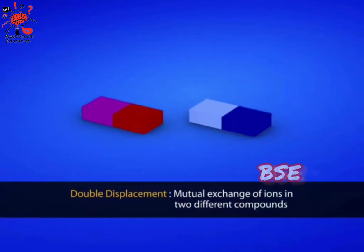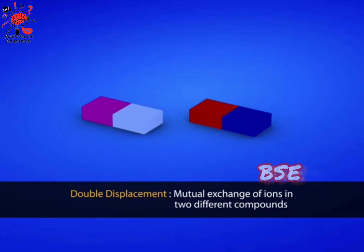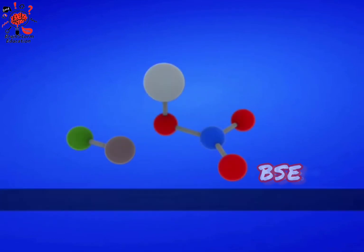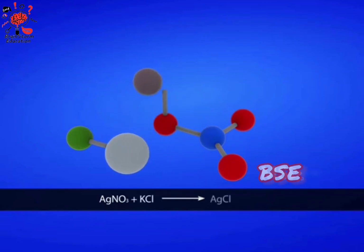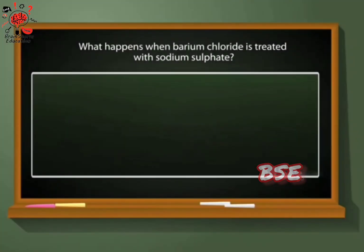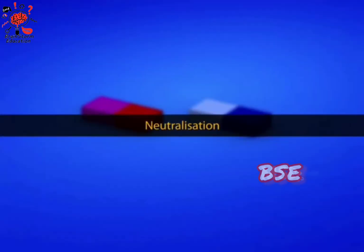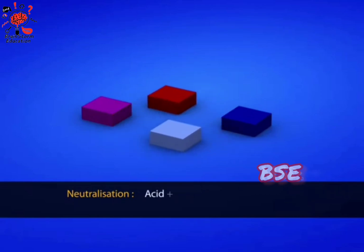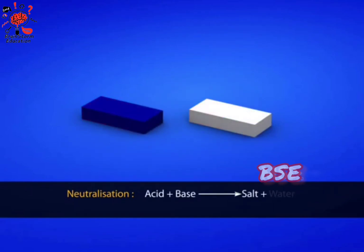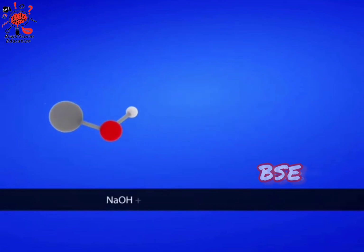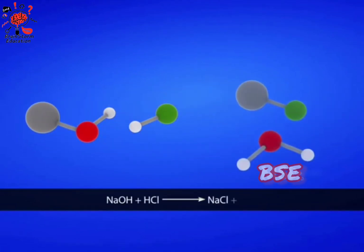Two compounds react to form different compounds by mutual exchange of ions or atoms in a double displacement reaction. When silver nitrate reacts with potassium chloride, it gives silver chloride and potassium nitrate. Neutralization is also an example of double displacement reaction. Sodium hydroxide reacts with hydrochloric acid to give sodium chloride and water.